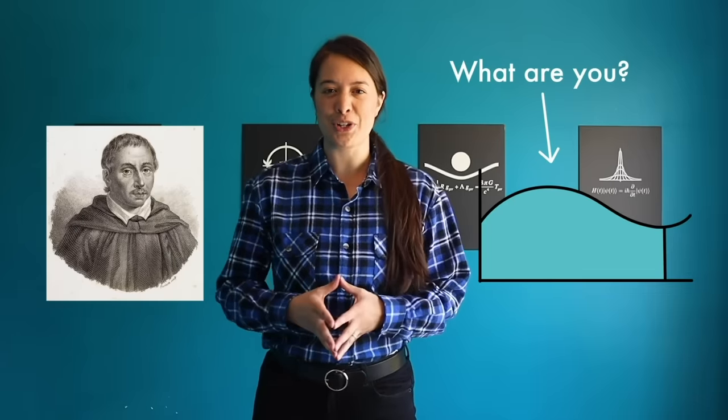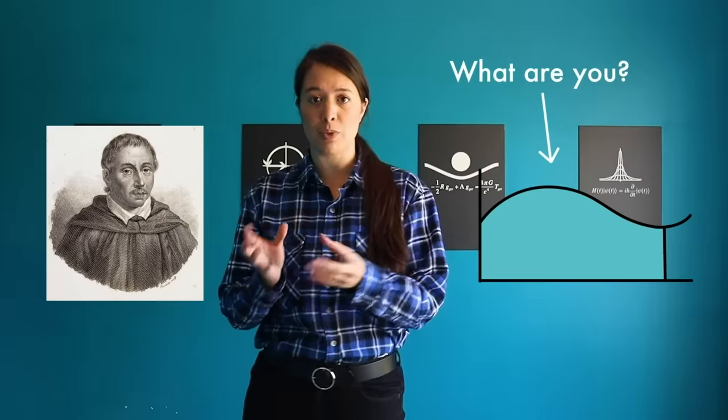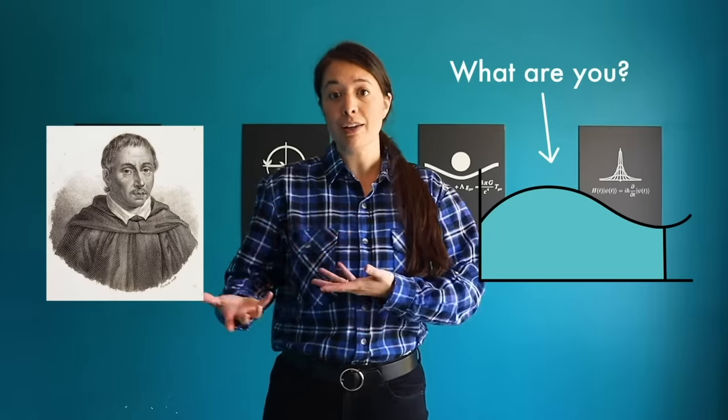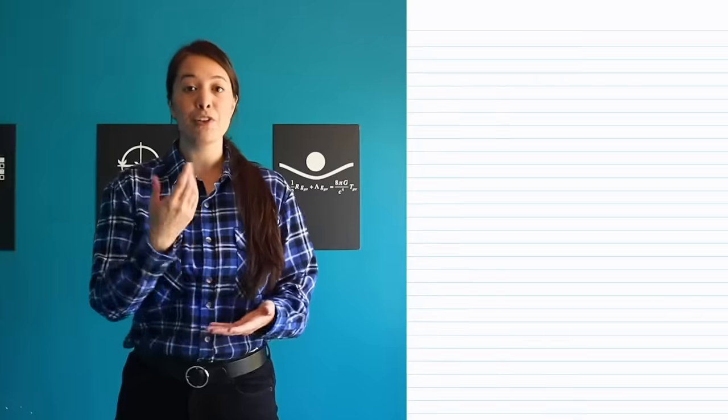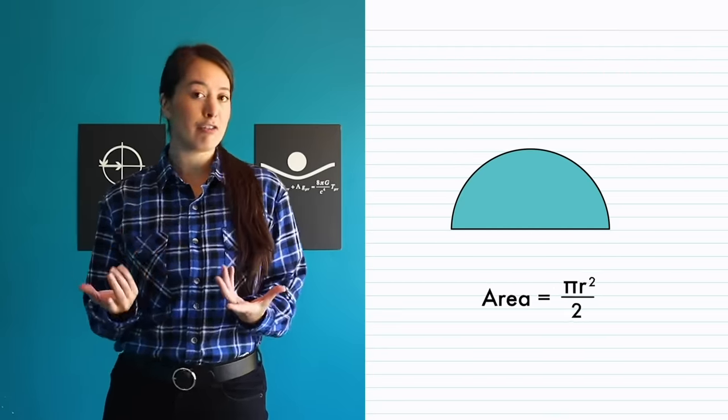A mathematician named Bonaventura Cavalieri wondered if we could use the formula for shapes we already knew to calculate shapes we didn't know. For example, take this semicircle. It has a known area of half pi r squared.